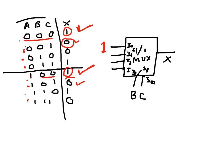Now for I1, I look at the rows where BC is 0-1. I see that both outputs are 0, even though A changes from 0 to 1. Since the output is always 0 regardless of A, I can apply constant 0 at I1.